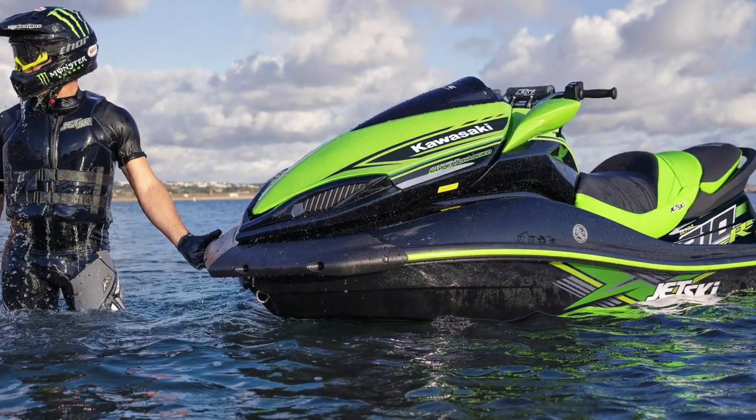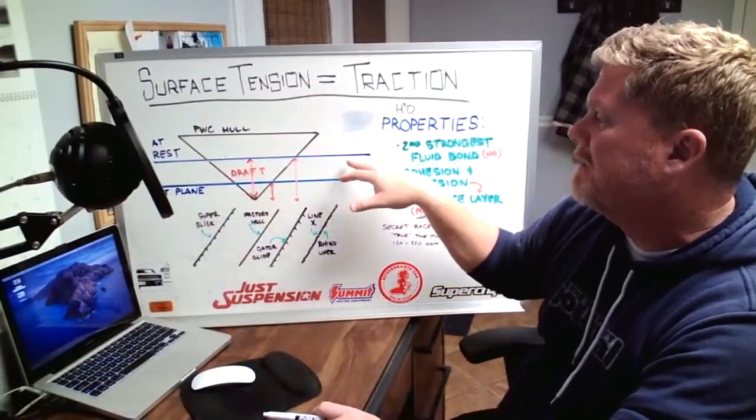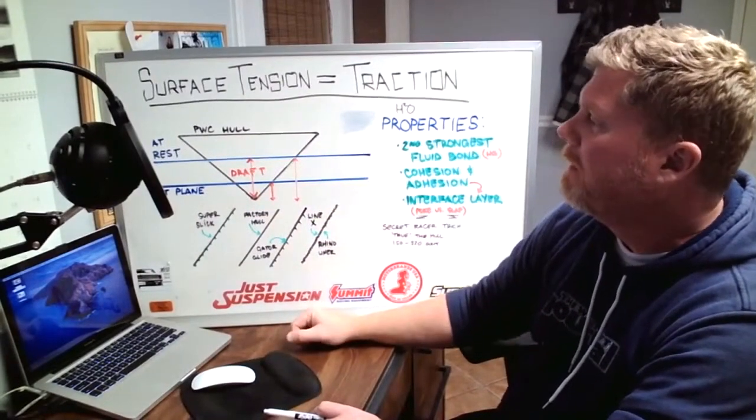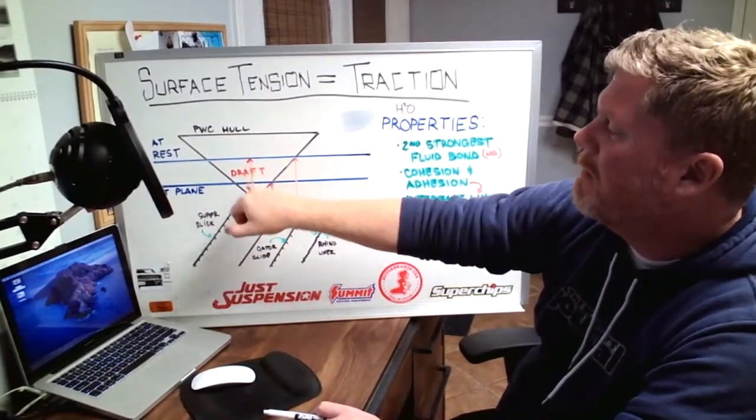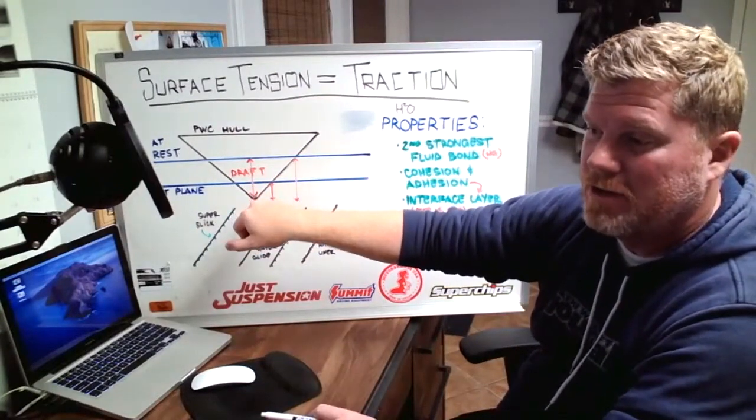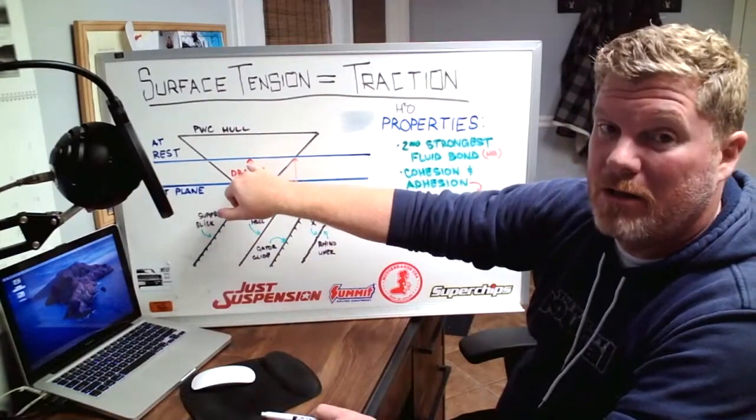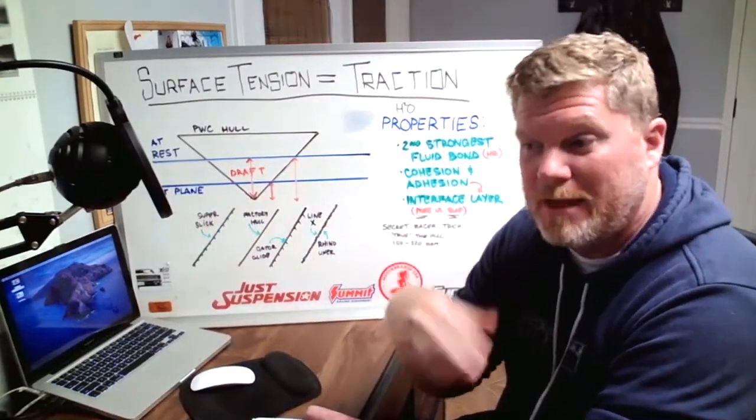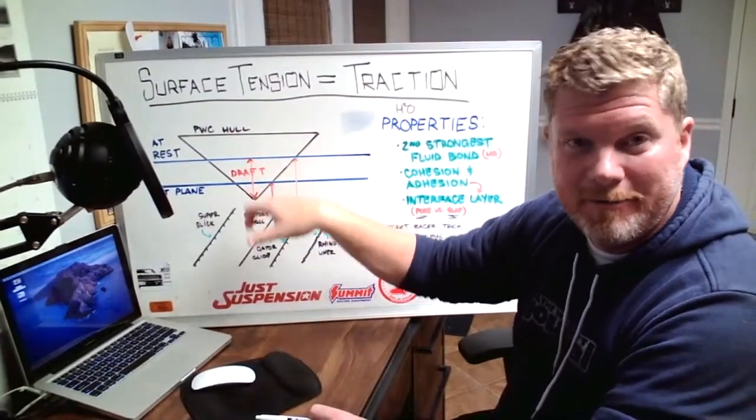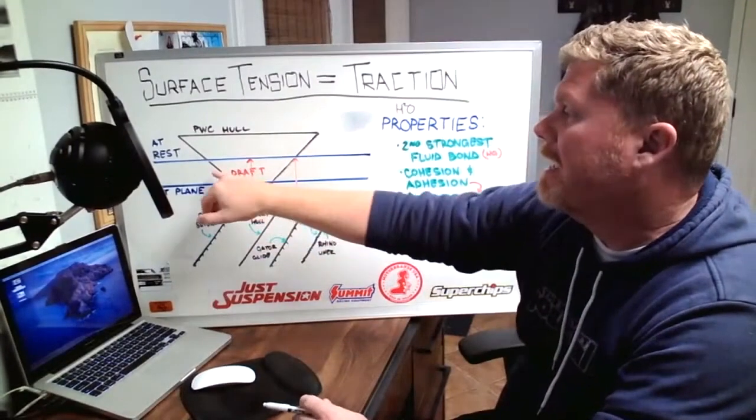That's your at-rest line. This blue line represents the water at rest on the hull. If you measure from the very bottom of your hull, what boaters might call your keel, to that waterline, that is your draft. That's how much hull is in the water.